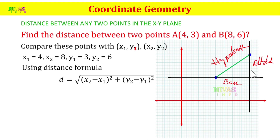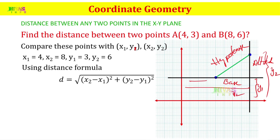The altitude is y2 minus y1. So y2 is 6 and y1 is 3, giving the altitude. This total length from x1, y1 to x2, y2 is the distance. So x1 = 4, x2 = 8, y1 = 3, y2 = 6 — these values are substituted.